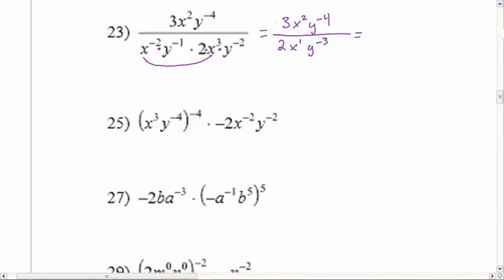So then I can group these together. This is just a fraction which doesn't reduce so I'm going to leave it. x squared over x to the first — two minus one is one, so x to the first. Then I've got negative four minus negative three. Do the subtraction carefully so you don't make a mistake — that's plus a positive, so negative four plus three which is negative one. So y to the negative one. We're going to have 3x over 2y to the positive one now that it's on the bottom. There's the answer.